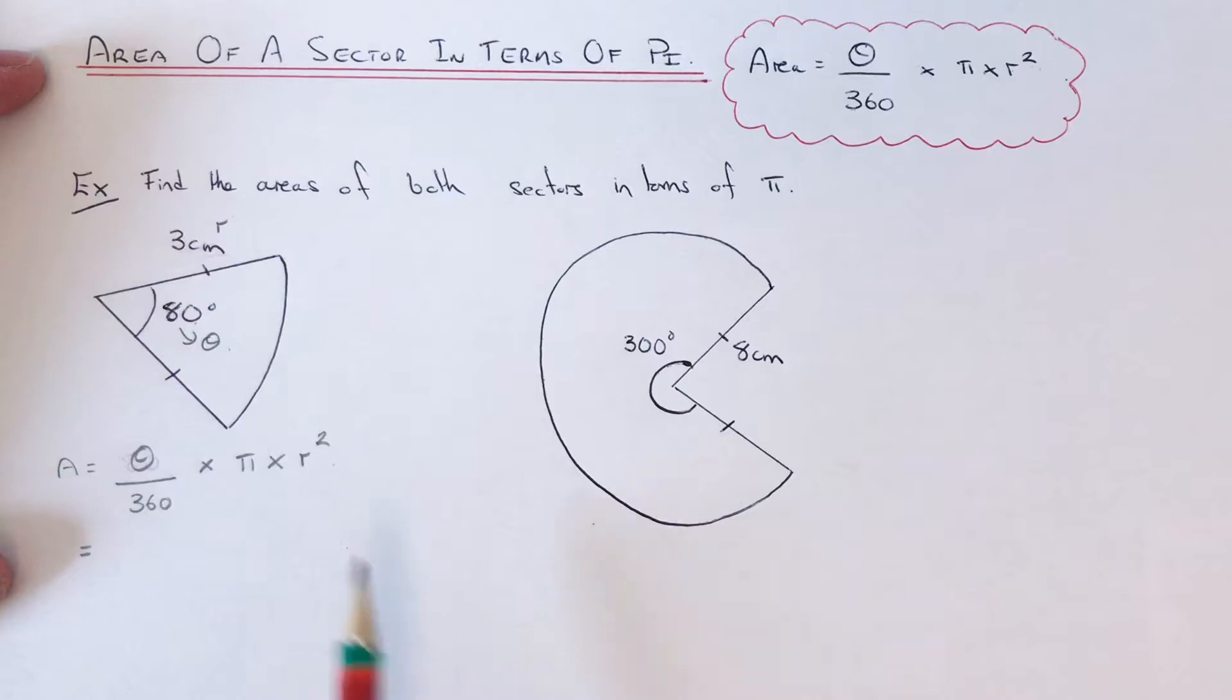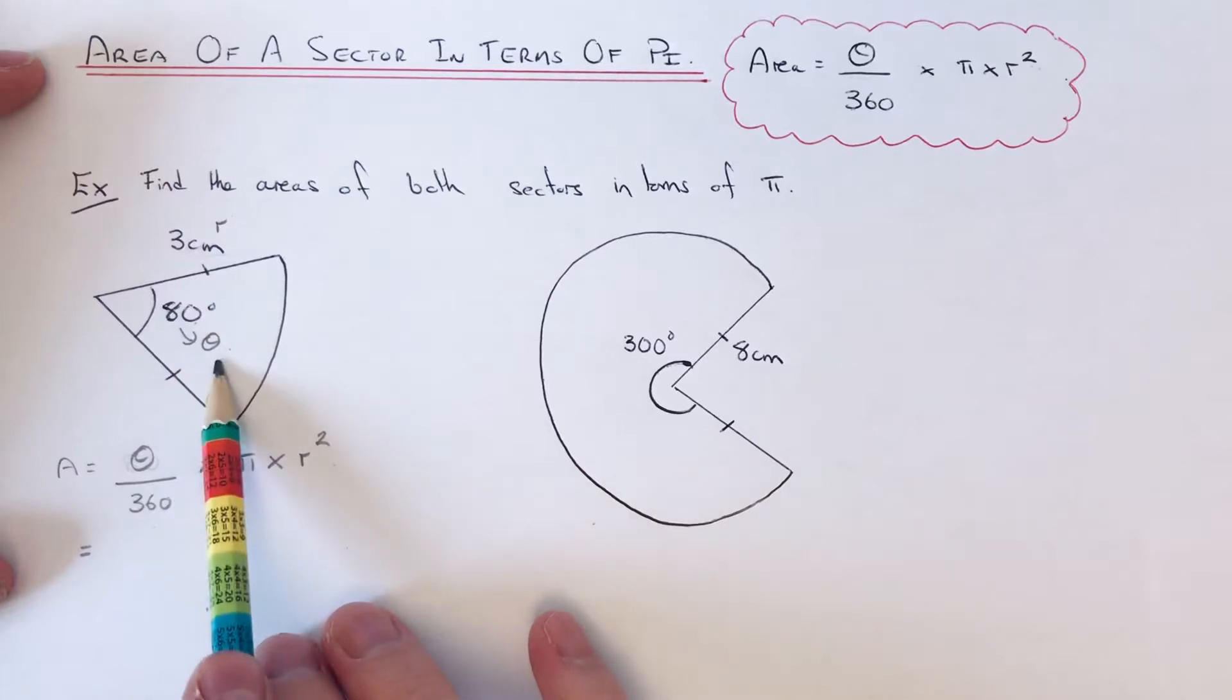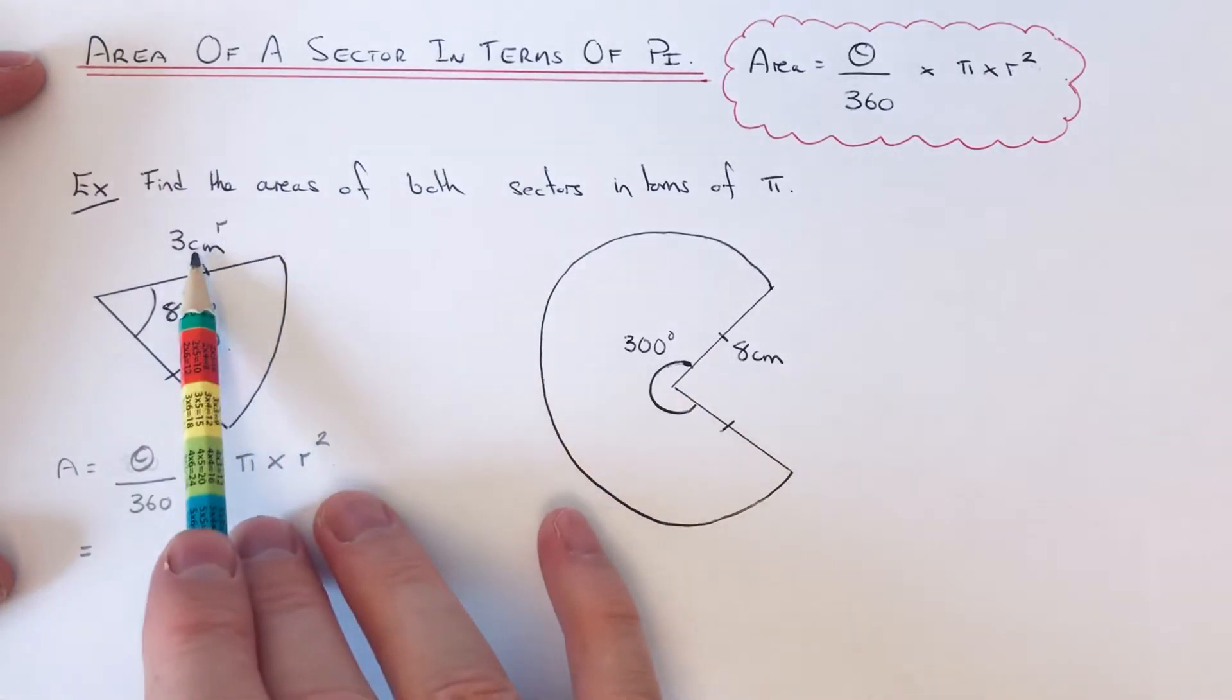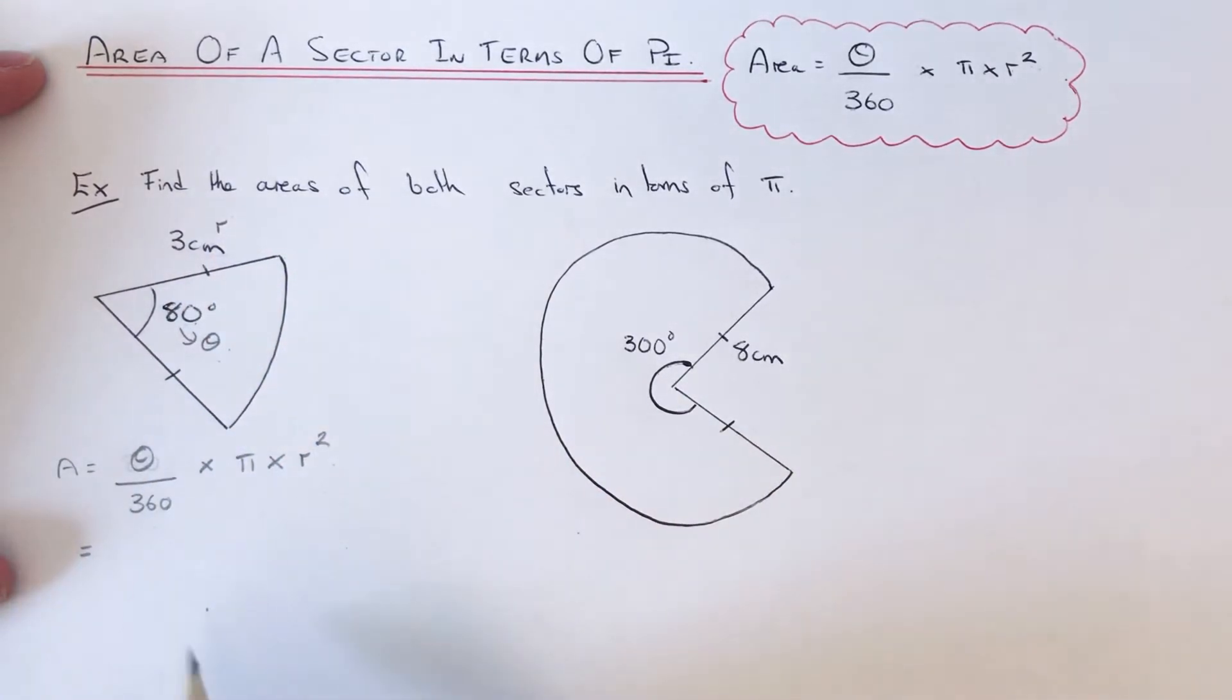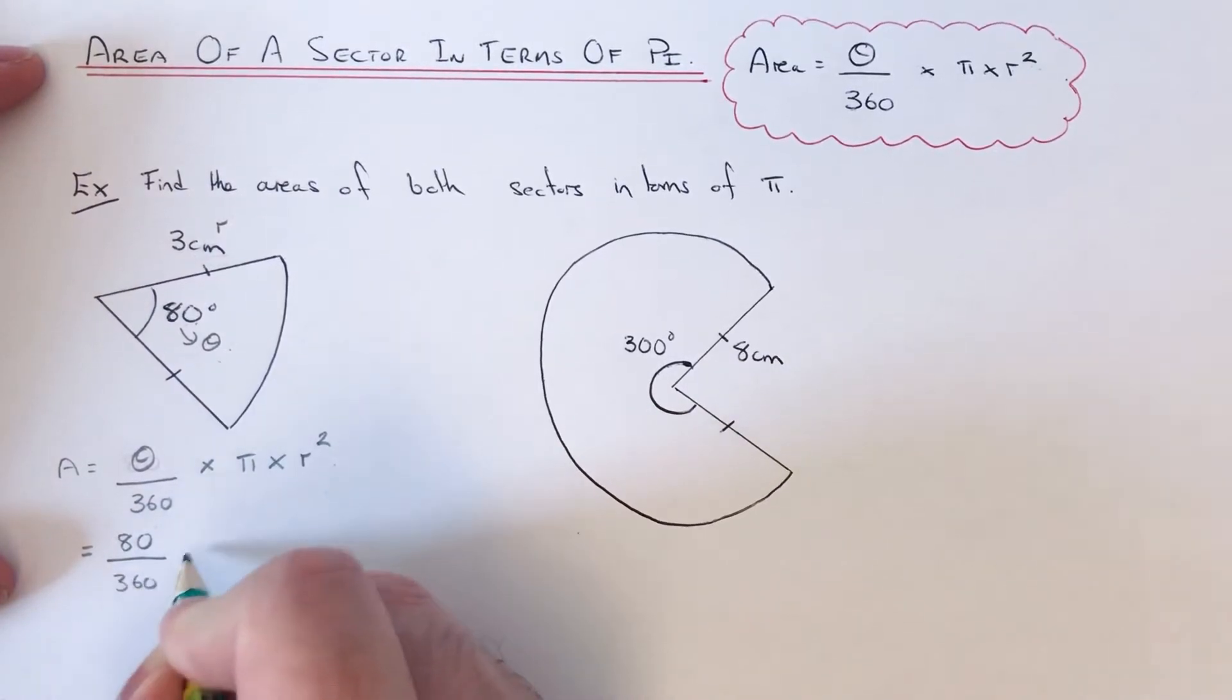Let's have a look at our first sector. We've got an inside angle of 80 degrees, so that's theta, and we've got a radius of 3 centimeters. If we substitute this into the formula, which I've already written down, it's 80 over 360 times pi times 3 squared.